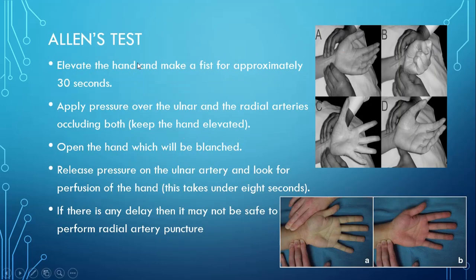For the Allen's test, first elevate the hand and make a fist for approximately 30 seconds. Then apply pressure over both the ulnar and radial arteries, occluding both while keeping the hand elevated to stop blood flow. Then open the hand — it will be blanched, appearing whitish, as seen in the picture.